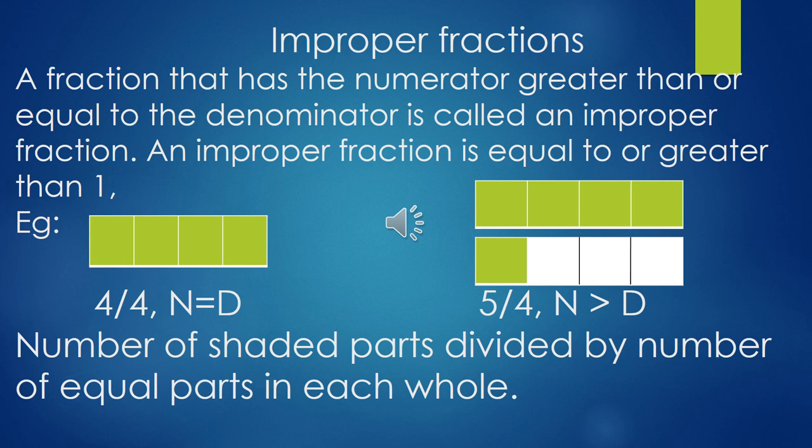In the second figure, five by four — numerator is greater than the denominator. This represents the number of shaded parts divided by the number of equal parts in each whole.